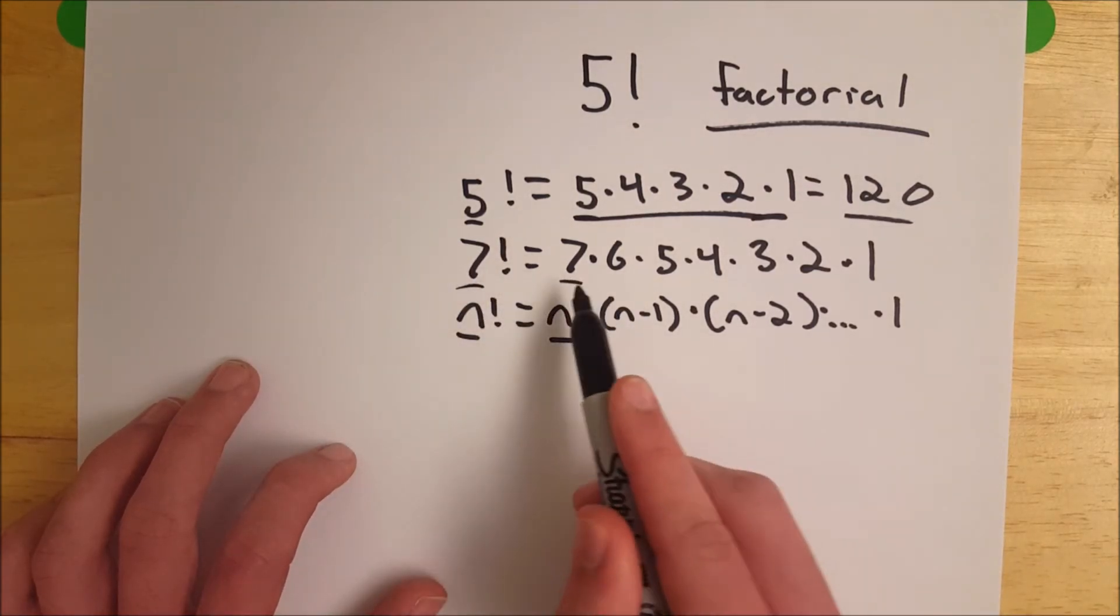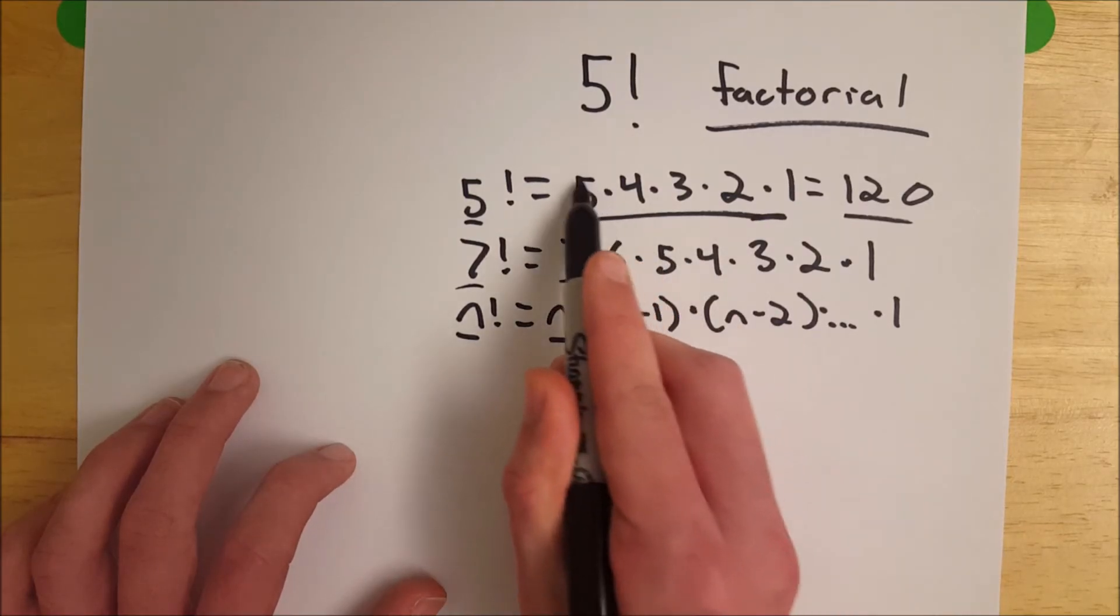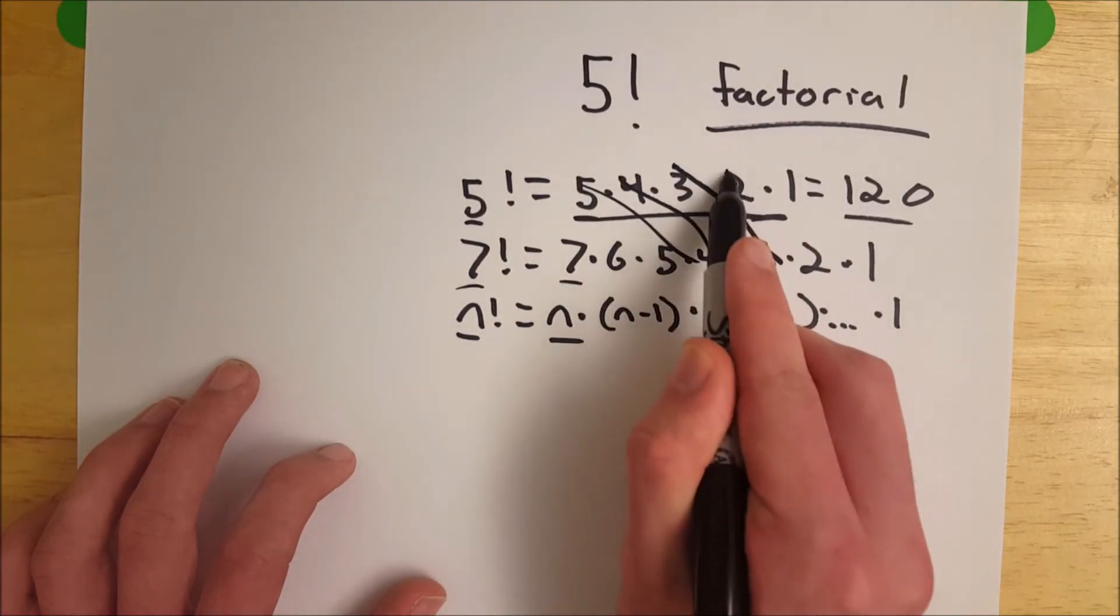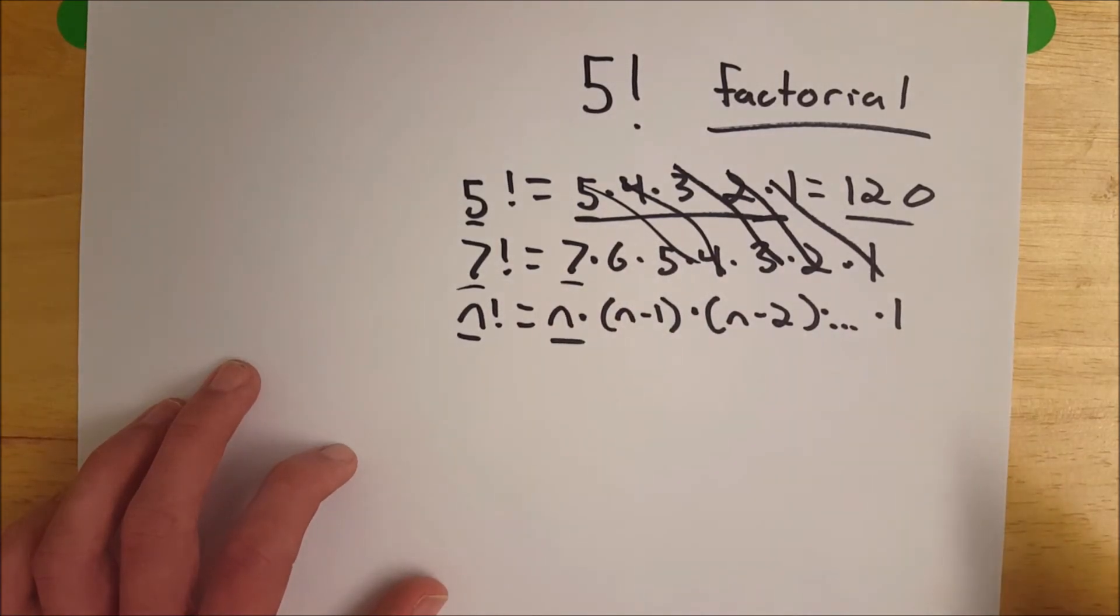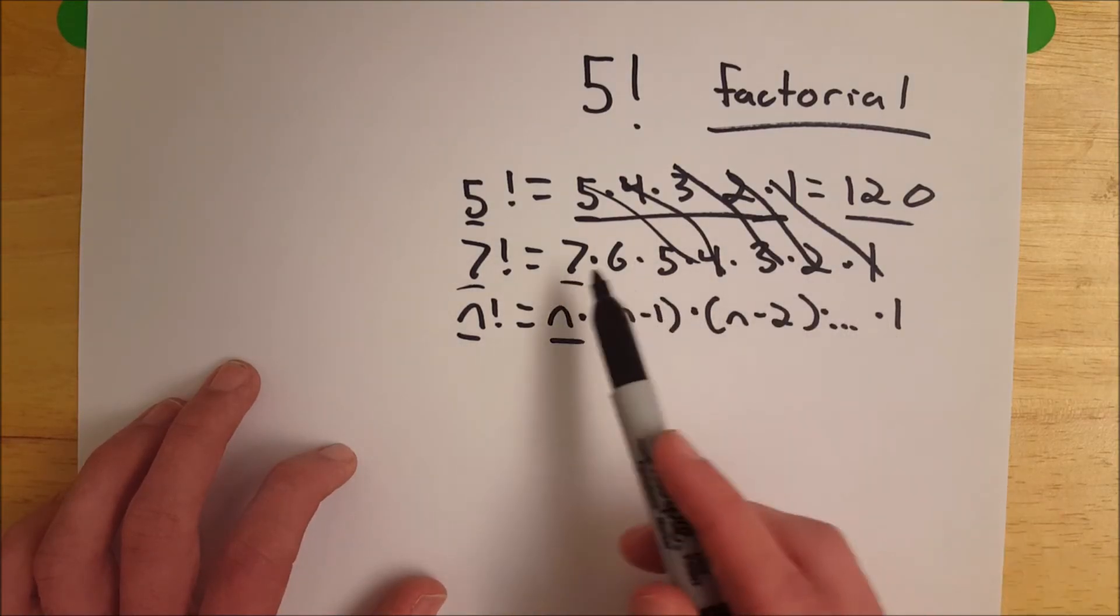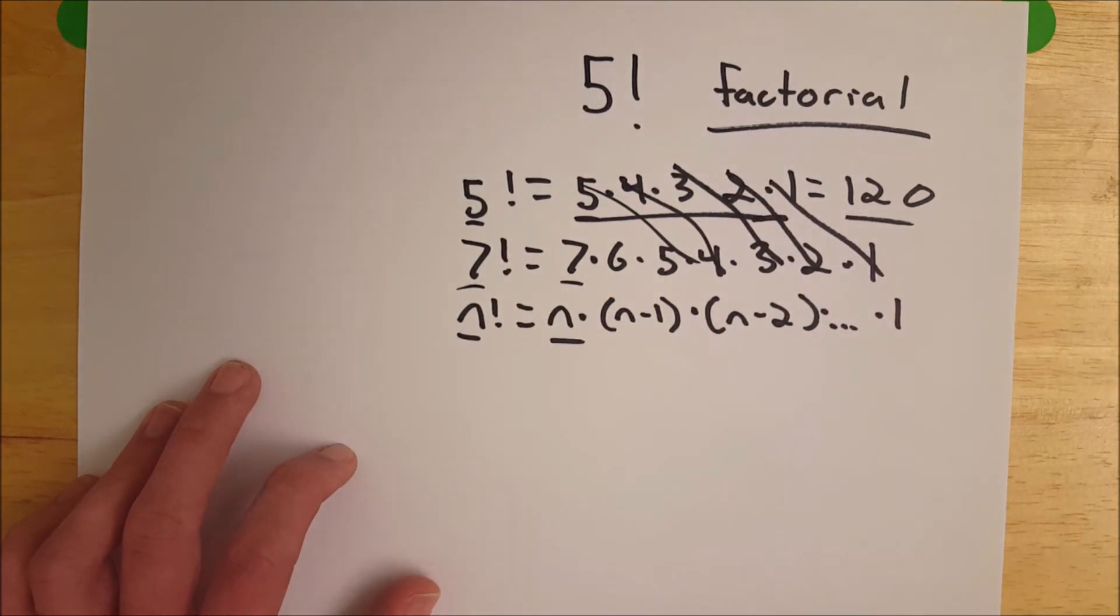You can see here though, if we put seven factorial over five factorial, these terms are going to cancel out and make some ones, and you're just going to get seven times six if you divided seven factorial by five factorial. I think I said it the other way around earlier, but either way, this could be on the numerator or the denominator depending on what's getting divided by what. So lots of cool stuff happens there.